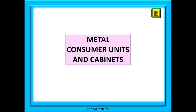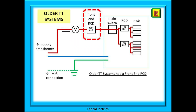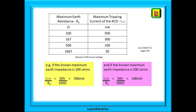Let's talk about metal consumer units and metal electrical cabinets. Older TT systems often used a front-end RCD — in other words, even if RCDs were fitted inside the consumer unit, a separate RCD was installed just before the consumer unit. This would often be a 100 milliamp delay type, or S type RCD, to allow for discrimination between devices. But why 100 milliamps — would another value ever be used? We have a table for this and the full version can be found in the wiring regulations book on page 156.